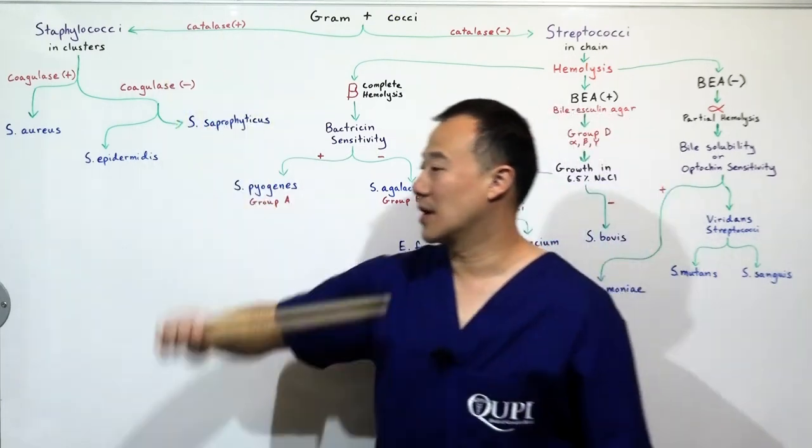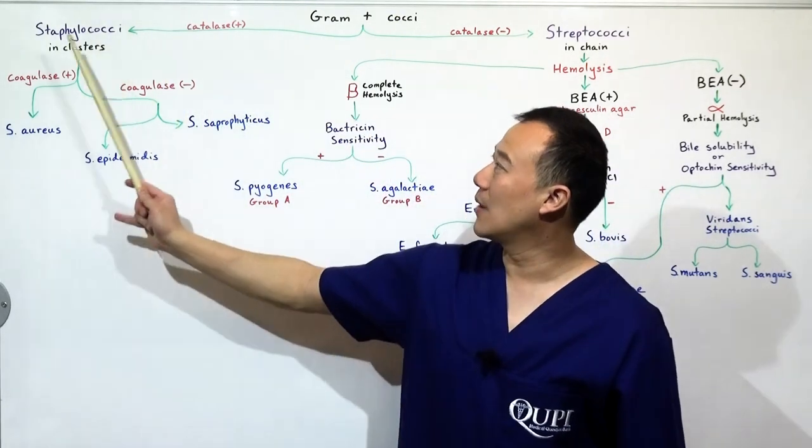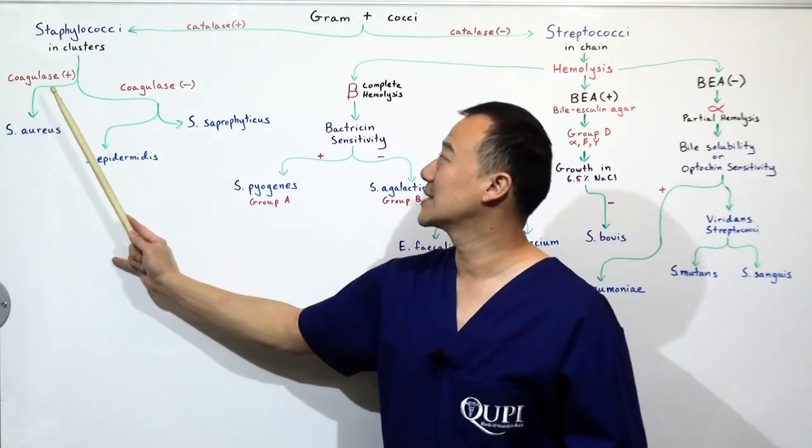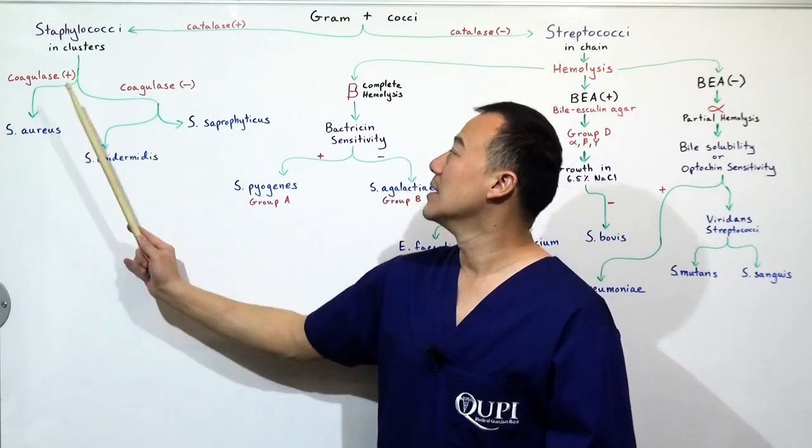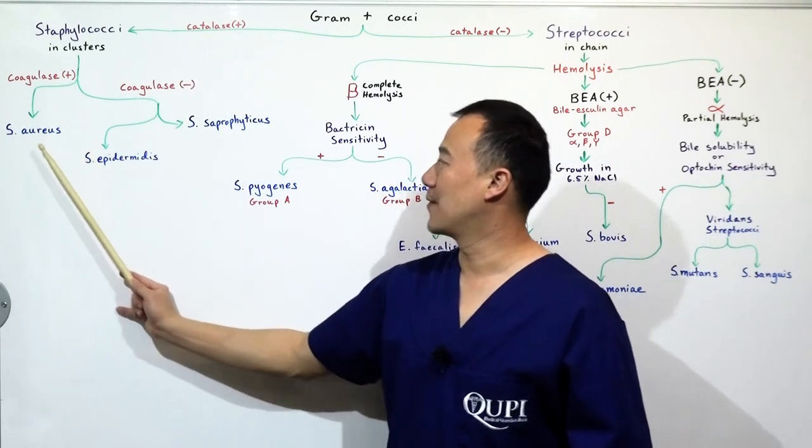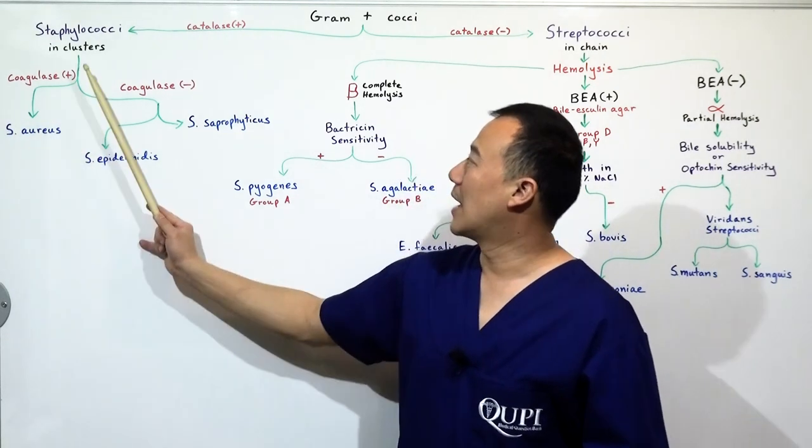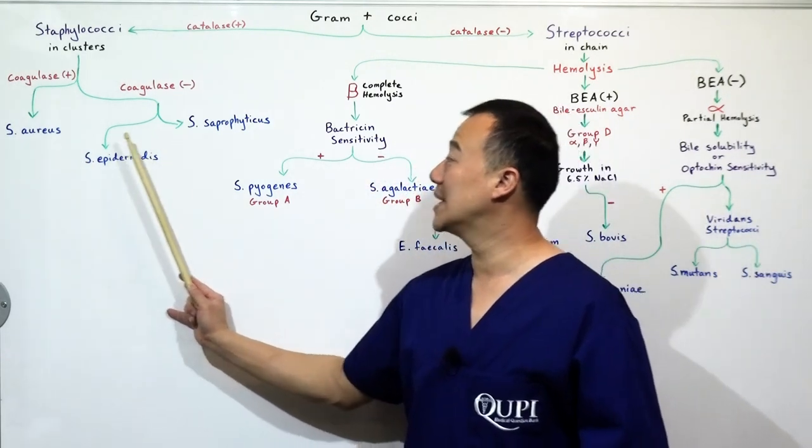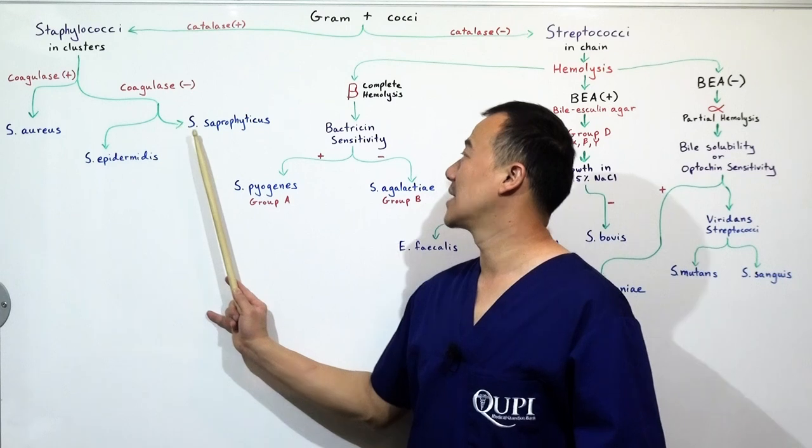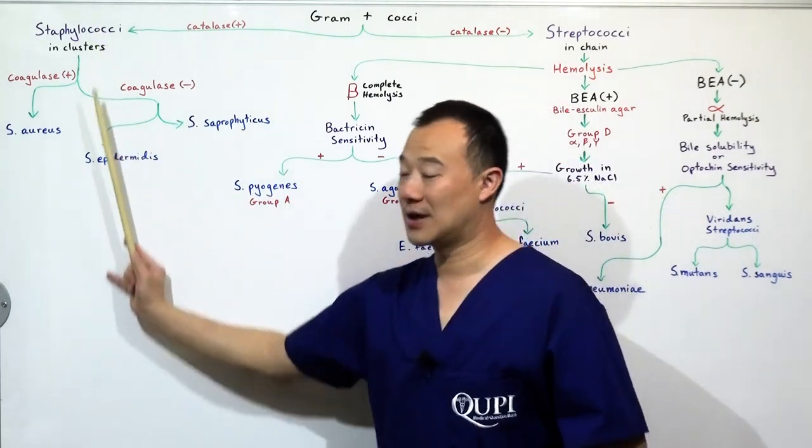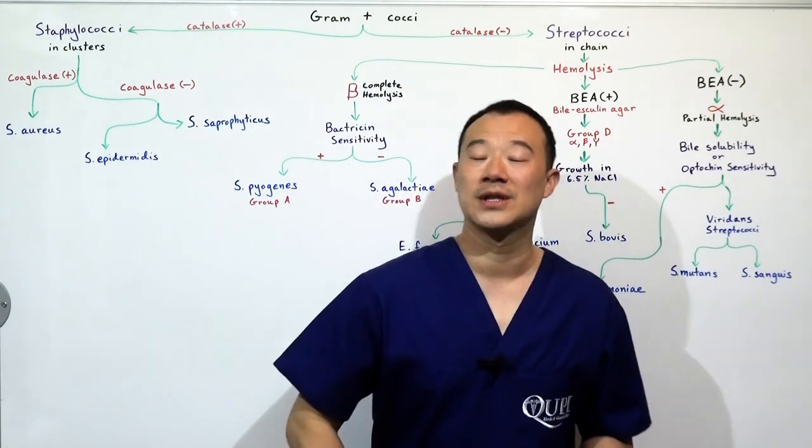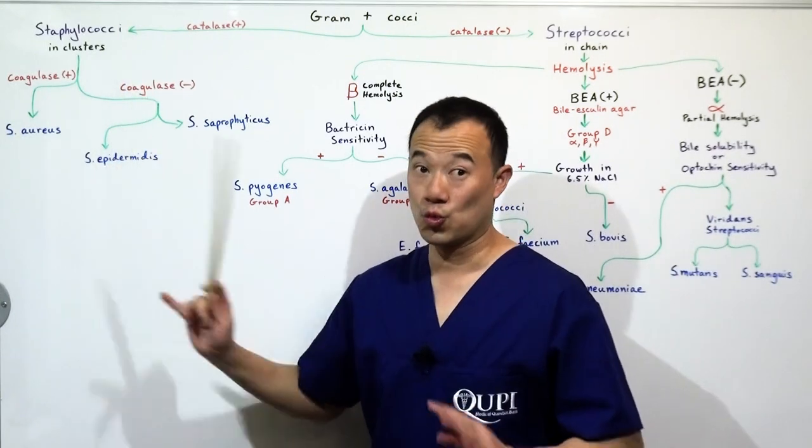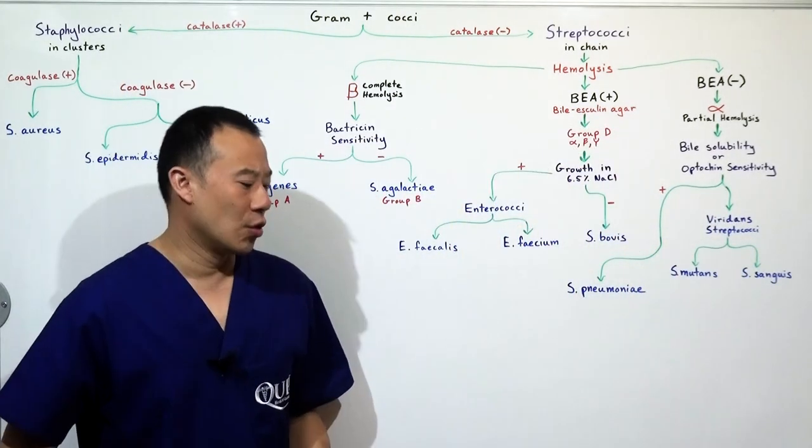Let's start with Staphylococci. Now we know it's here. If another test shows that the bacteria is coagulase positive, which means it has coagulase, then the only choice is Staphylococcus aureus. Now, if it is coagulase negative, you'll have two choices. It's either S. epidermidis or S. saprophyticus. So that's Staphylococci for you. Simple. If you get a board exam question on Staph bacteria, you should not get it wrong.